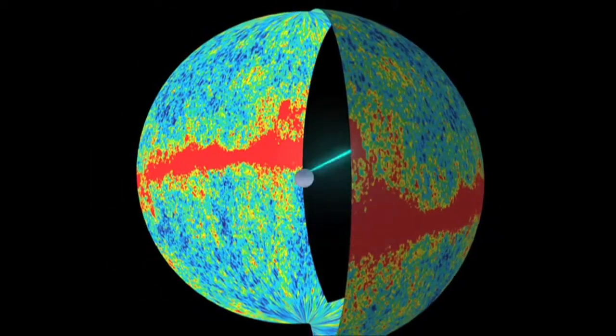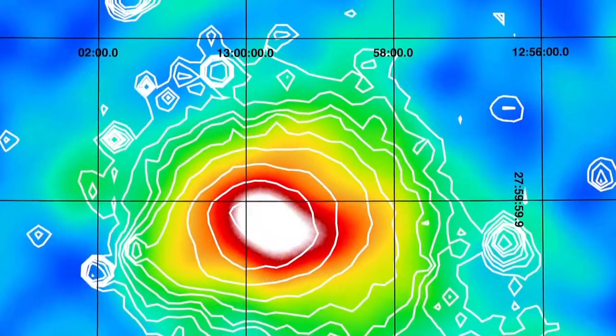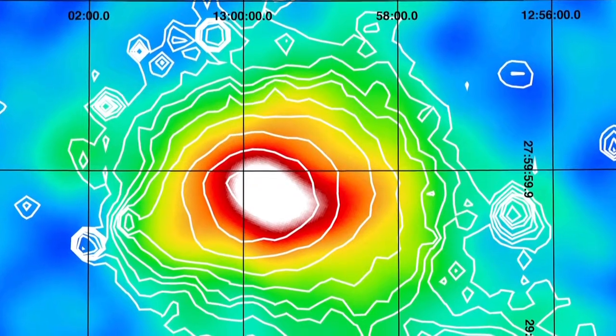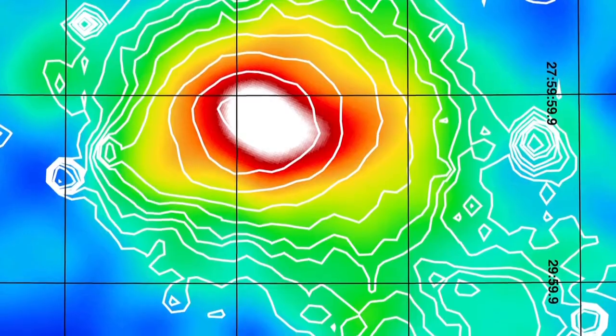What it sees is the anisotropies of the cosmic microwave background, but also all the other astrophysical objects that emit at the same wave bands, the same colors.